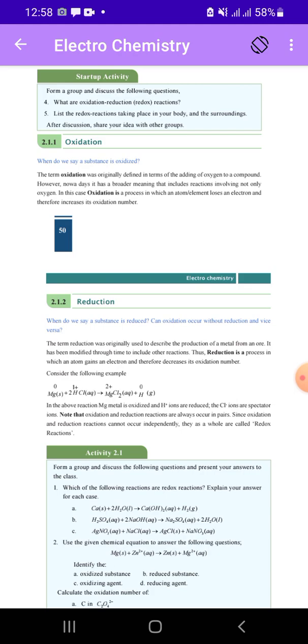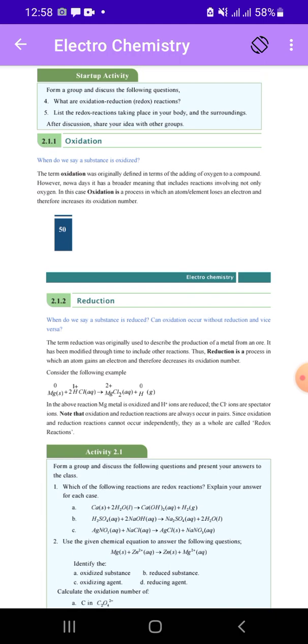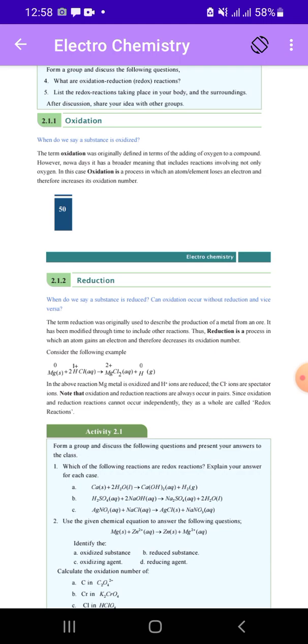Topic 2.211 Oxidation. When do you say a substance oxidized? What do you mean? The term oxidation was originally defined in terms of adding oxygen to the compound. However, nowadays it has been broadened in meaning to include reactions involving not only oxygen.